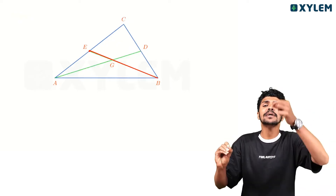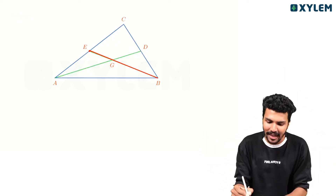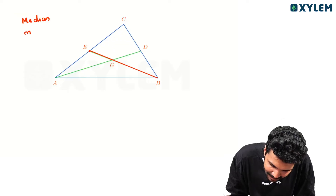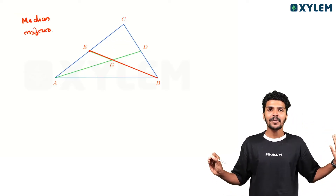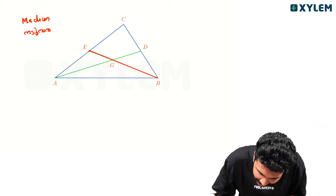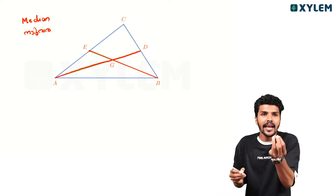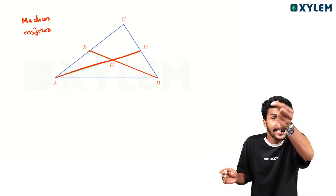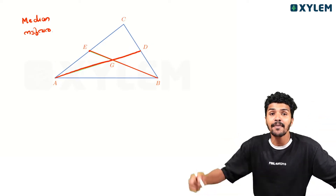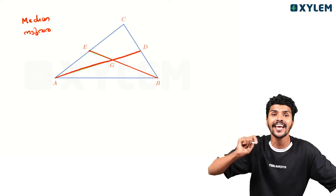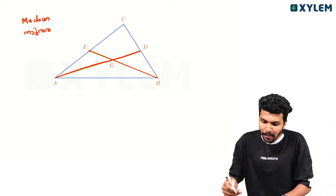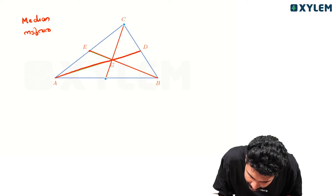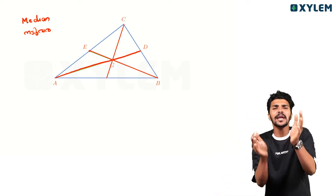You go from the midpoint up to the top vertex. In the midpoint, the midpoint of BC is D. A median connects the midpoint of a side — BC — to the opposite vertex A. If you have a median, you will find all medians meeting at one point.